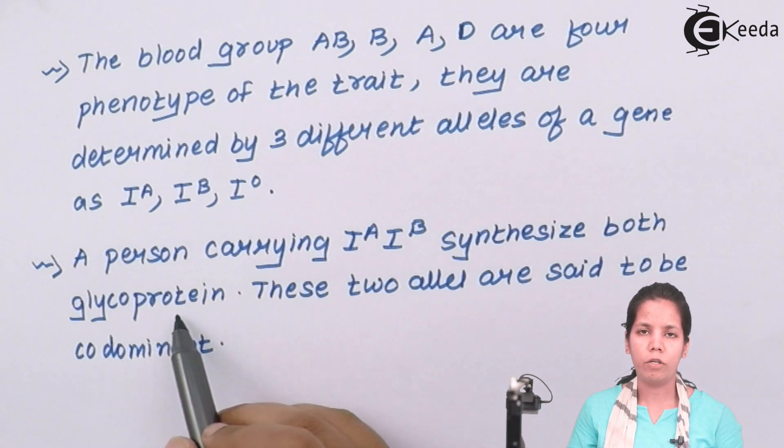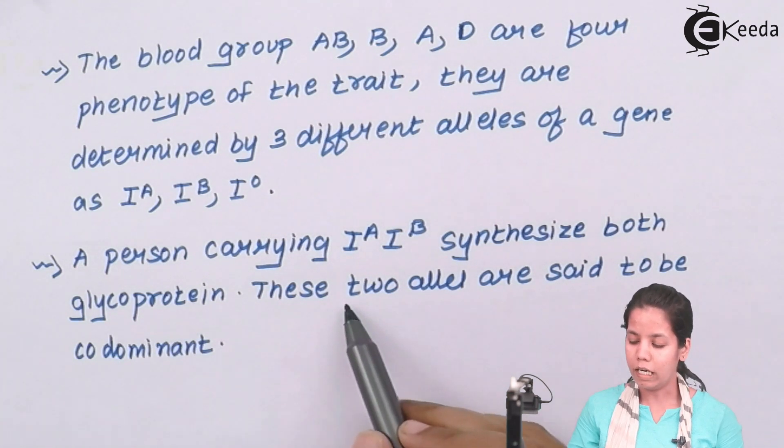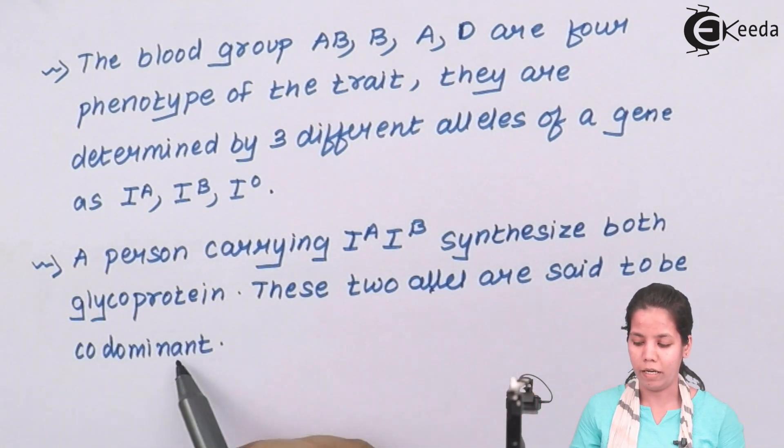Whenever blood donations or transfer of blood from one individual to another individual is seen, the RH positive and the RH negative factor is also considered, especially if a lady is pregnant with a child. At that time, RH positive and RH negative plays a great role. Now these two alleles are said to be co-dominant.